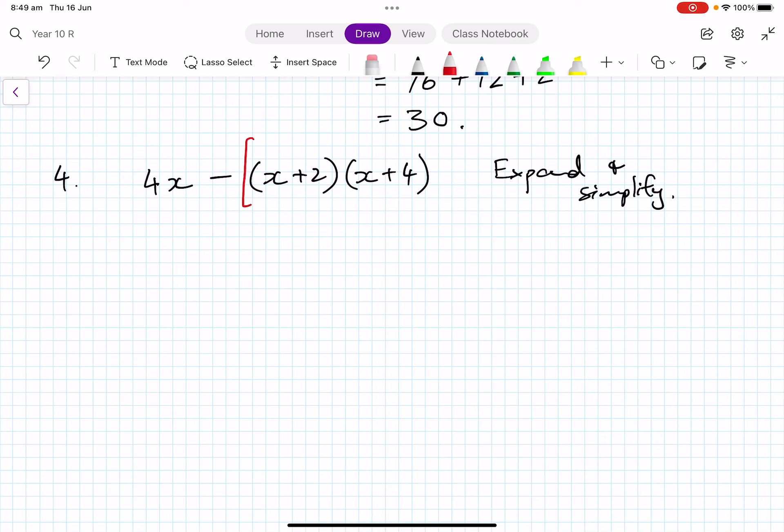So if I expand and simplify this, we've got this part, which I'm going to deal with separately. Once I've got that, I've got a negative out the front to do it. So this is going to be equal to 4x minus, now I'm going to just put in big brackets what we're going to do next. And if I go back to this one, we'll go first, outside, inside, last. So that's x times x: x squared. x times 4, they're all positive, which is nice. 2 times x is the next one. And then 2 times 4.